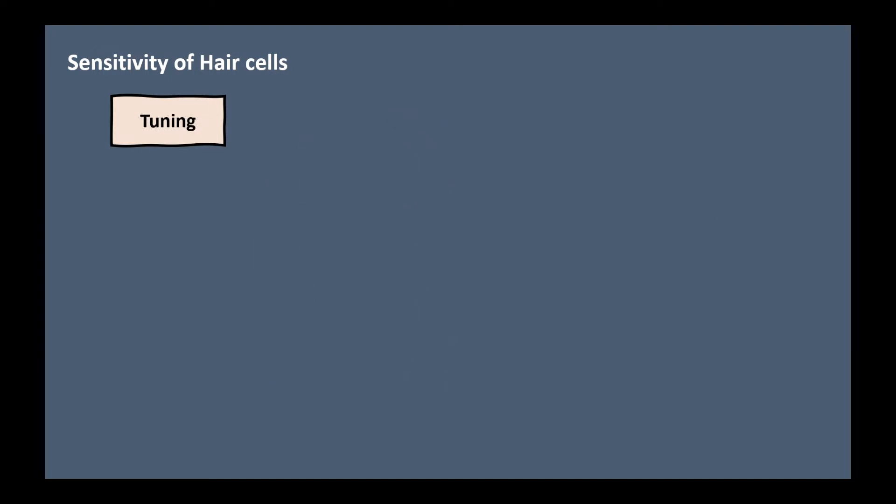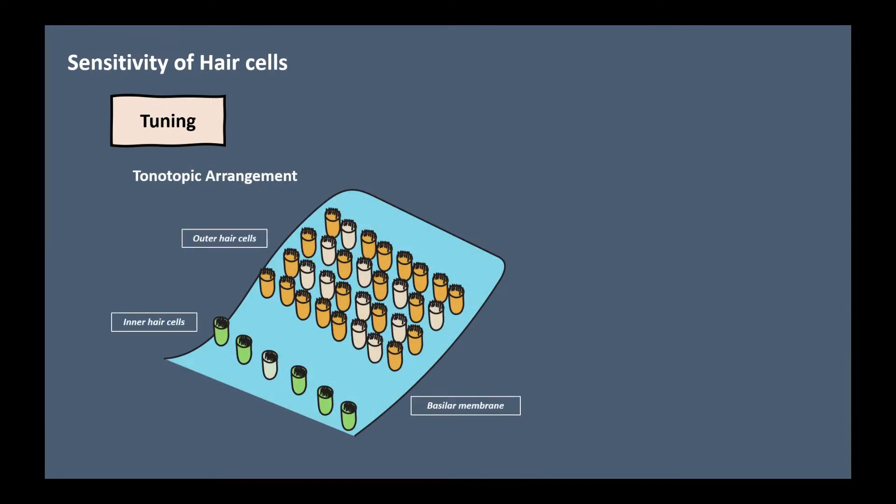How do hair cells tune the frequency of specific stimuli? Since the basilar membrane has tonotopic arrangement, every cochlear hair cell is most sensitive to stimulation at a specific frequency. So how are hair cells sensitive for frequency? On average, the characteristic frequencies of adjacent inner hair cells differ by approximately 0.2%. Adjacent piano strings are tuned to frequencies some 6% apart. You can see how sensitive the hair cells are.